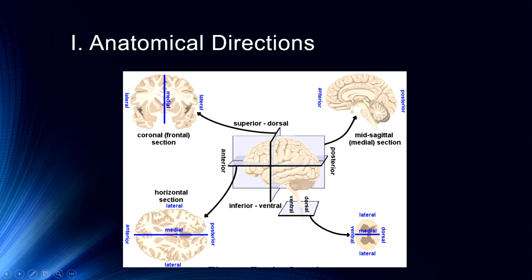We also want to think about medial and lateral. Medial means towards the middle; as you can see in the bottom left, lateral means towards the outside. So the dorsolateral prefrontal cortex is going to be on the top side of the brain towards the front and also towards the lateral side.